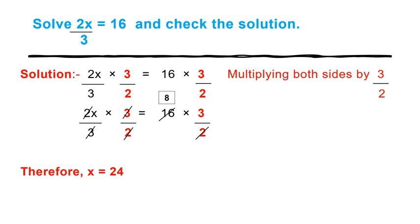On the RHS we got 24. 8 times 3 is 24. And on the LHS, x only. Therefore, x is equal to 24.